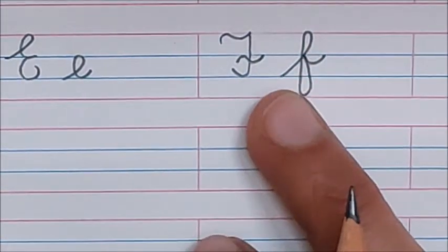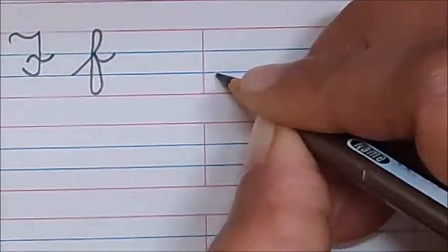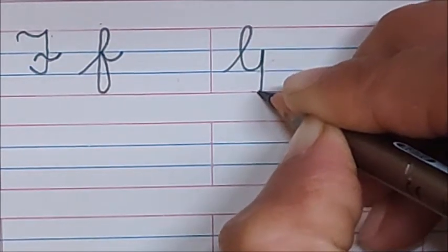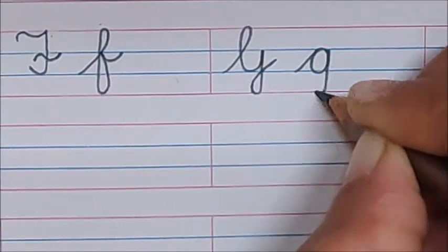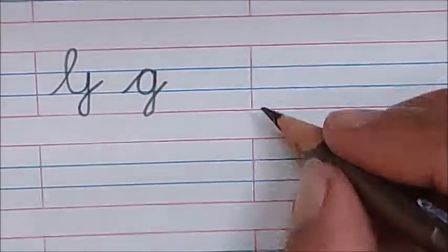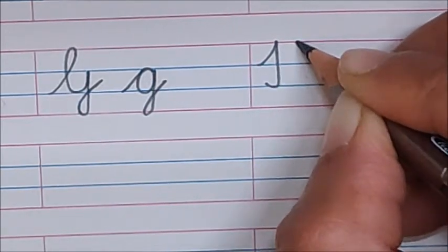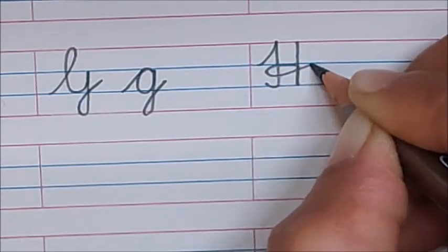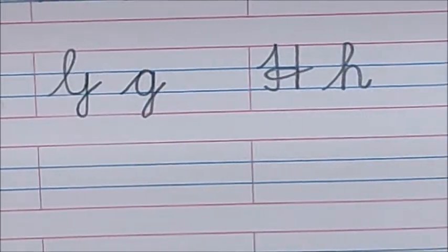After F comes G. Write down your G. How to write G? Go up, come down. Go up, come down. Touch the red line and tail. G. Next is H. Slanting line. Standing line. Turn. Again, make one more standing line. Come back on the same line. And make here a loop. And out. H.